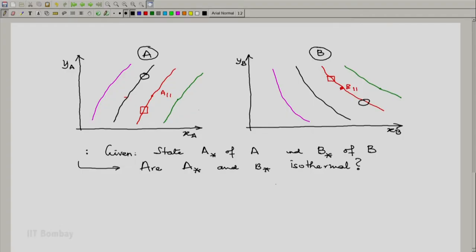Welcome back. We saw the purpose of creating a map of corresponding isotherms in the state space. Here we had as an illustration two systems A and B, and again as an illustration we had plotted four pairs of isotherms.